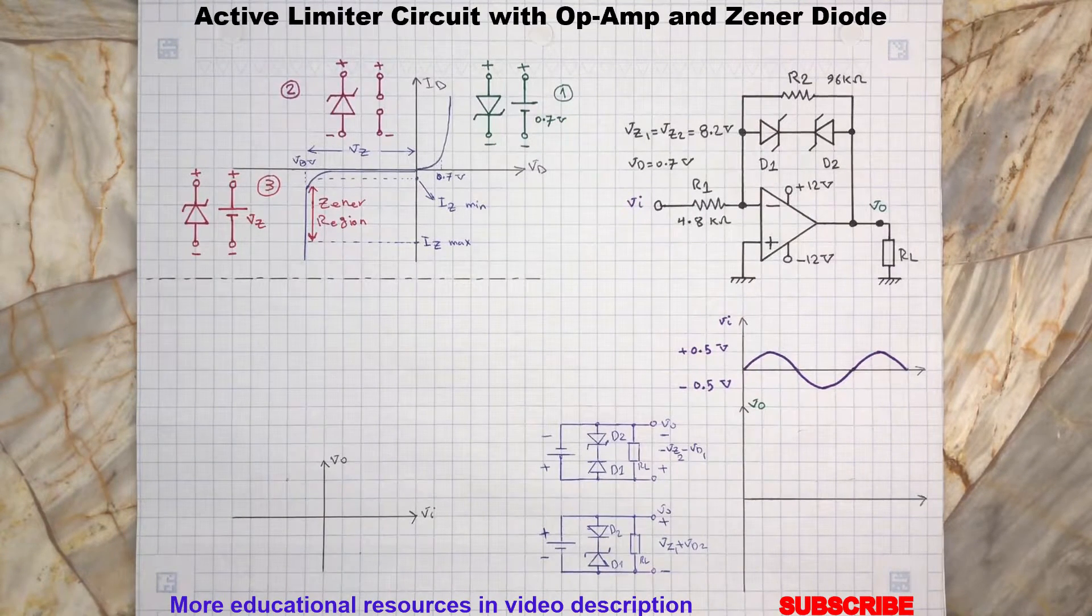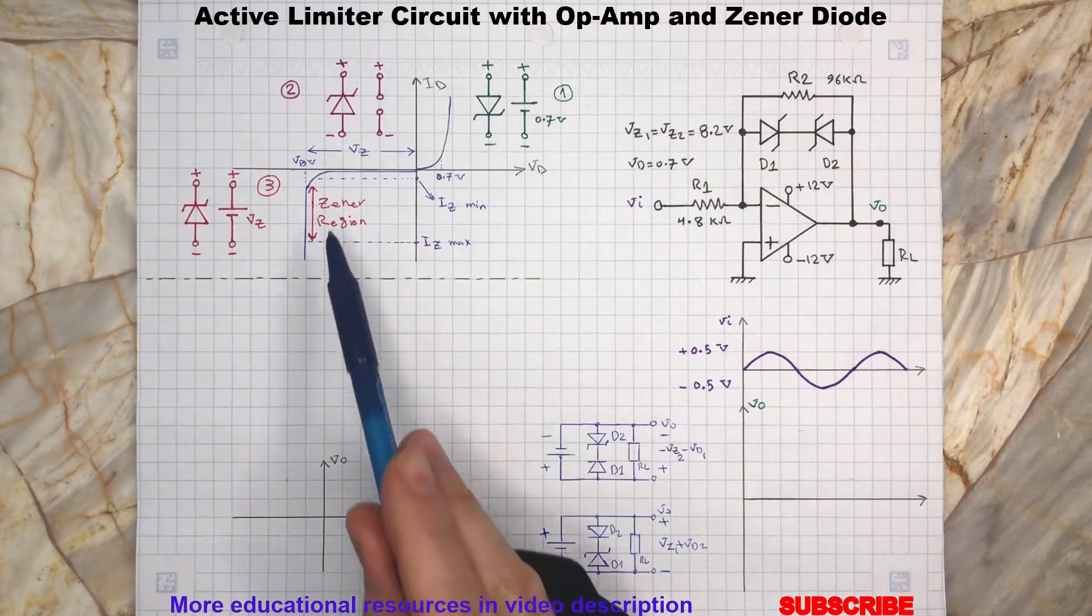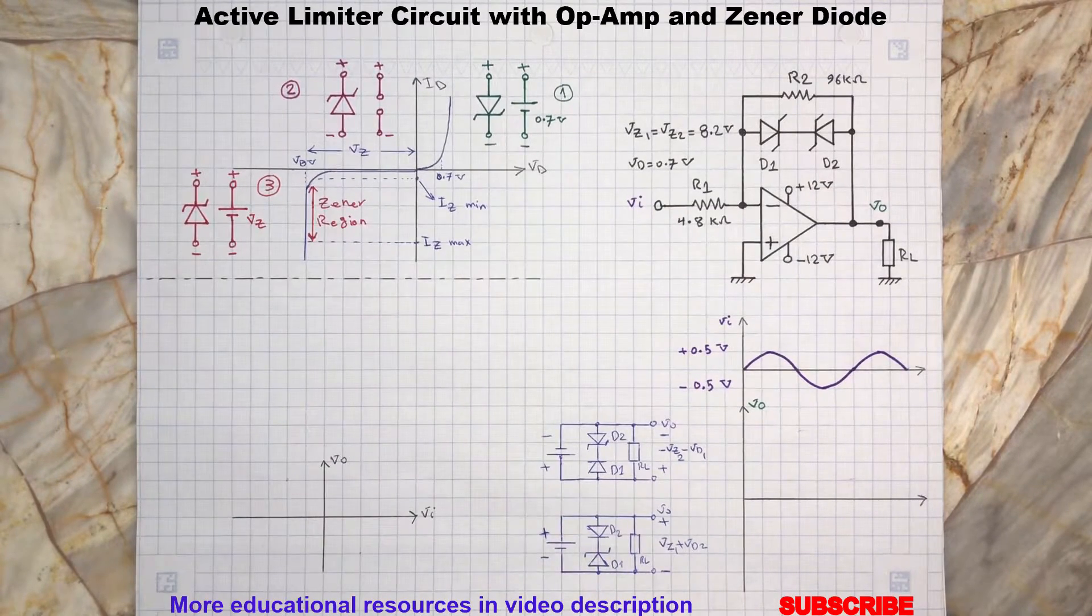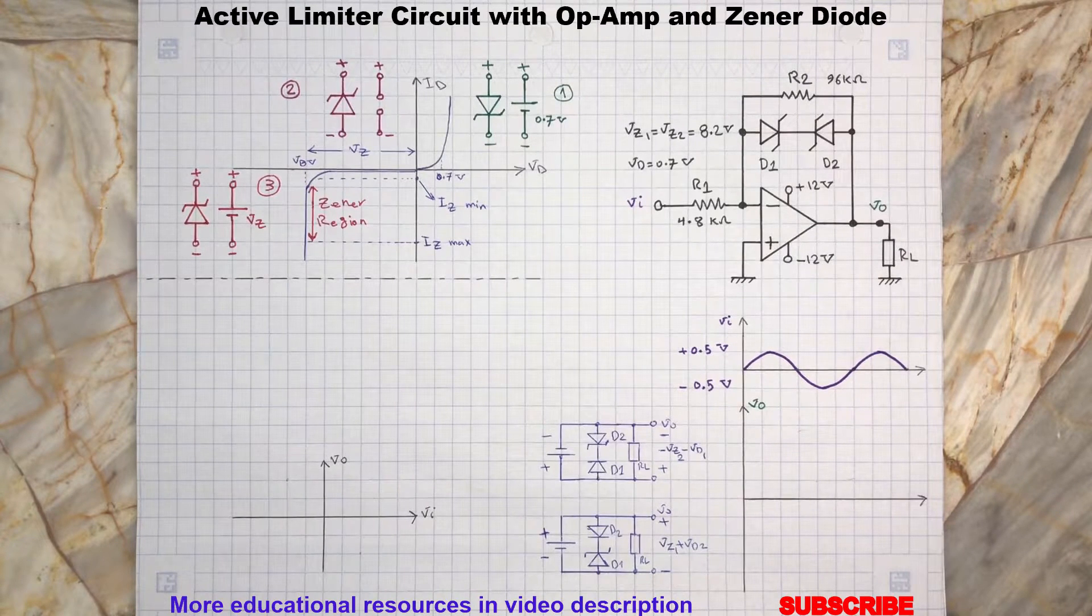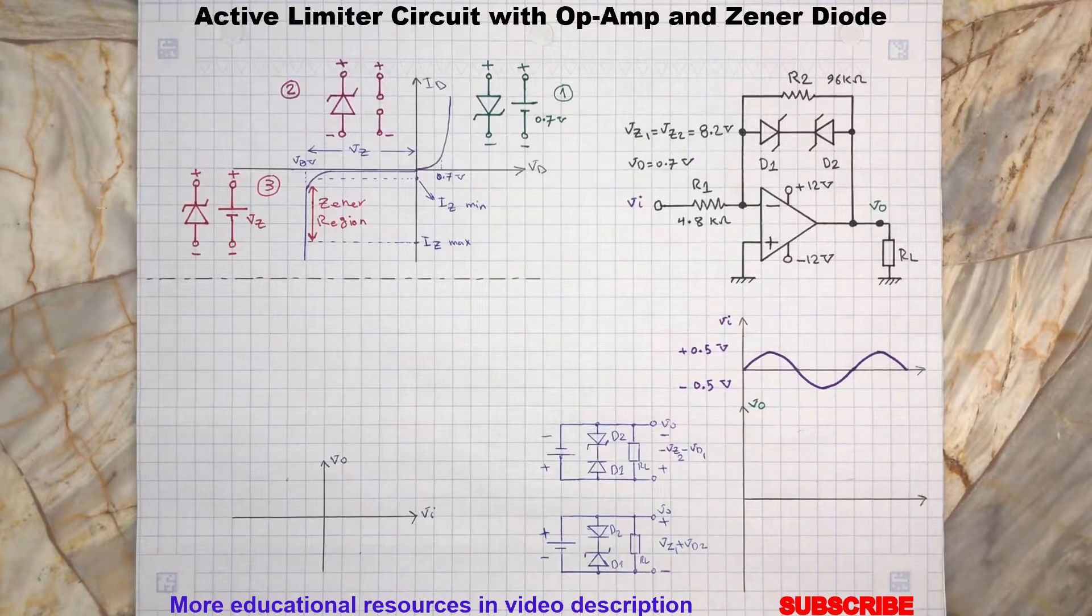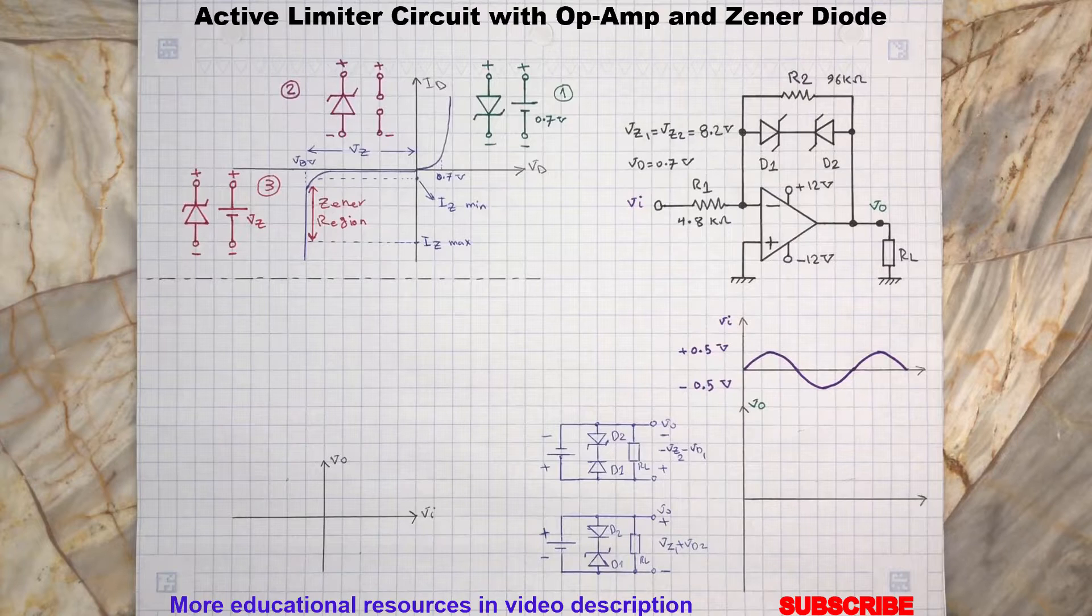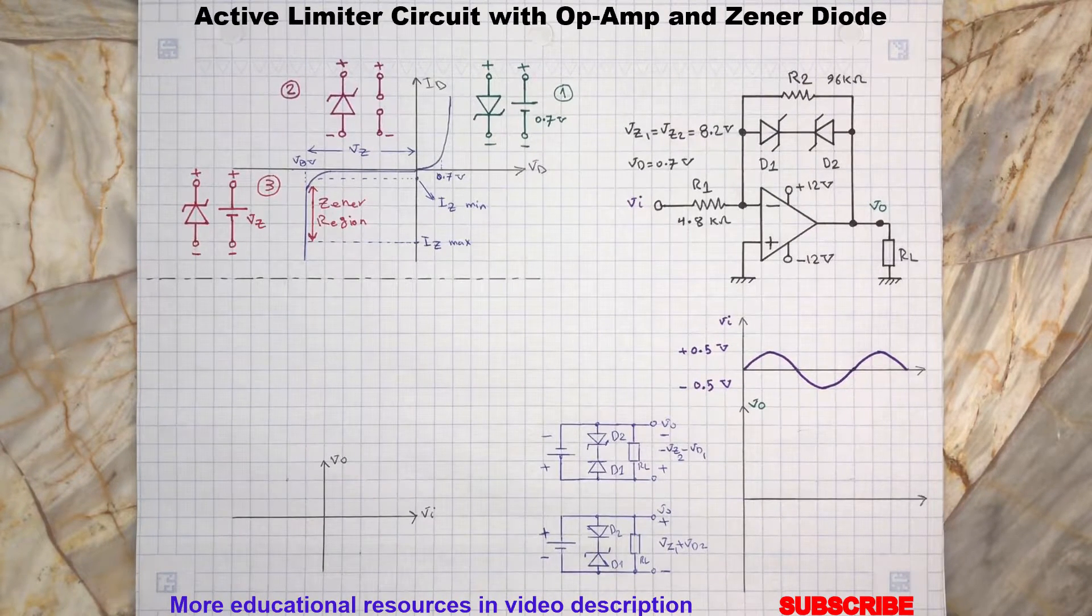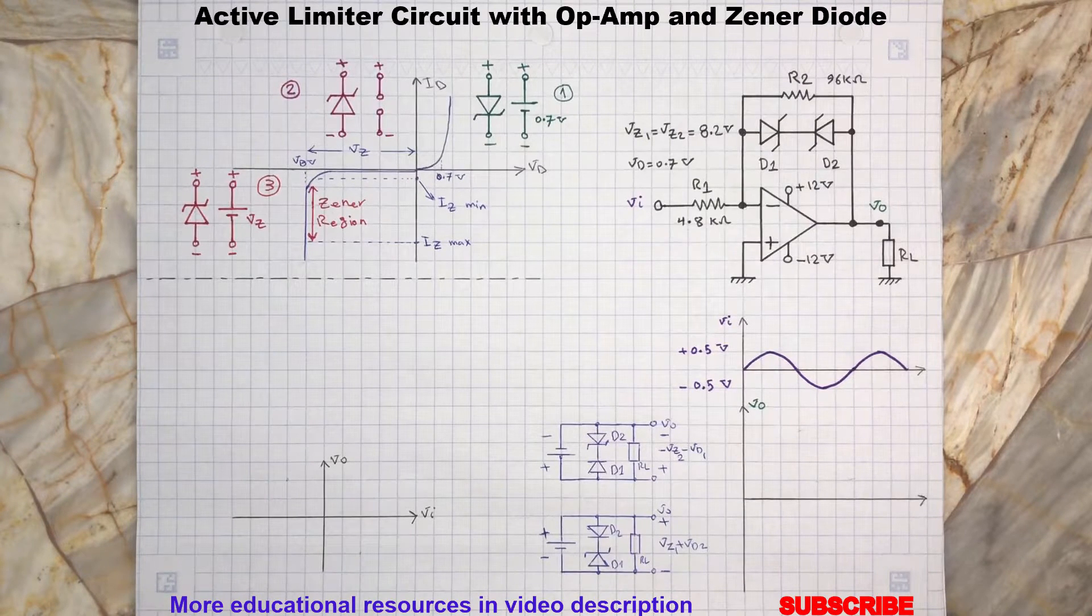The third region is Zener or breakdown. In this region, the Zener diode is still reverse biased, but by increasing the reverse potential it reaches a point where the Zener diode starts conducting rapidly. As you can see the breakdown region in the IV curve here.